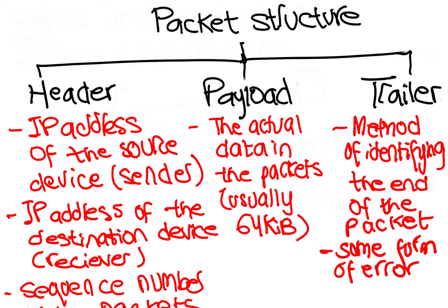This involves the sending computer adding up all the 1 bits in the payload and storing this as a hex value in the trailer before it is sent. Once the packet arrives, the receiving computer recalculates the number of 1 bits in the payload. The computer then checks this value against the one sent in the trailer. If the two values match, then no transmission errors have occurred. Otherwise, the packet needs to be resent.